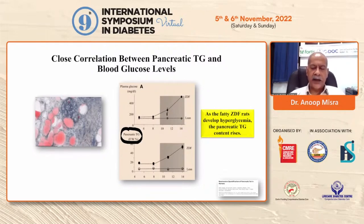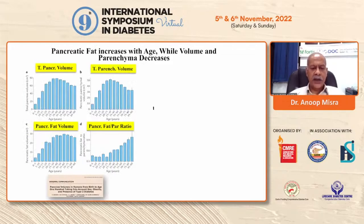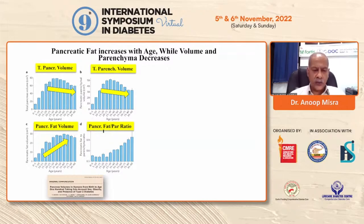How does pancreatic fat accumulate with aging, what are the cutoffs, and what is the prevalence of non-alcoholic fatty pancreatic disease? This slide shows the decade-wise distribution of pancreatic volume, total parenchymal volume, pancreatic fat volume, and the pancreatic fat-to-parenchymal ratio. Pancreatic volume decreases as one gets older, while pancreatic fat volume increases — a clear discrepancy between the two.